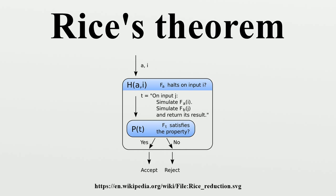Since P decides a non-trivial property, it follows that there is a string B that represents an algorithm and P(B) = yes. We can then define an algorithm H as follows. First, construct a string T that represents an algorithm T such that T first simulates the computation of F_A(I), then T simulates the computation of F_B and returns its result. Second, return P(T). We can now show that H decides the halting problem. Assume that the algorithm represented by A halts on input I. In this case F_T equals F_B, and because P(B) = yes, and the output of P depends only on F, it follows that P(T) = yes, and therefore H(A, I) = yes.